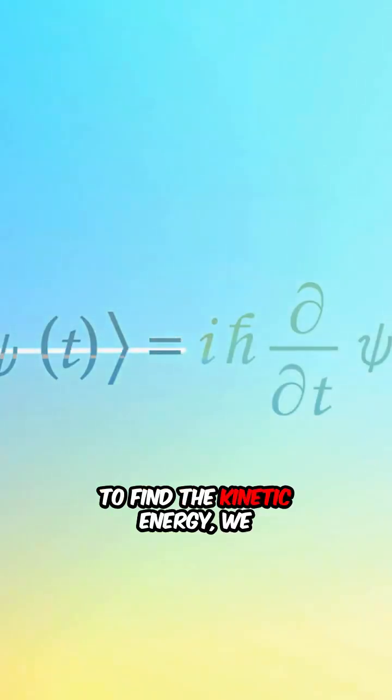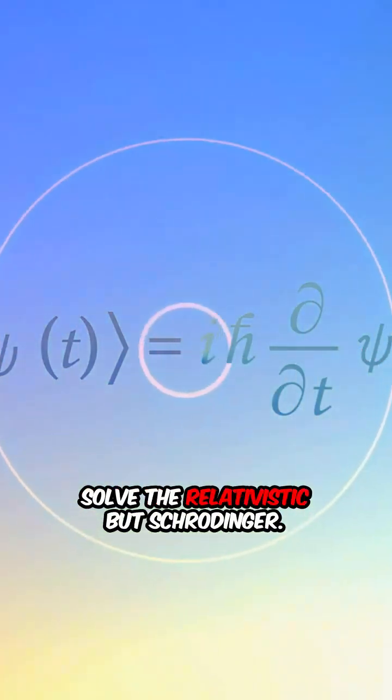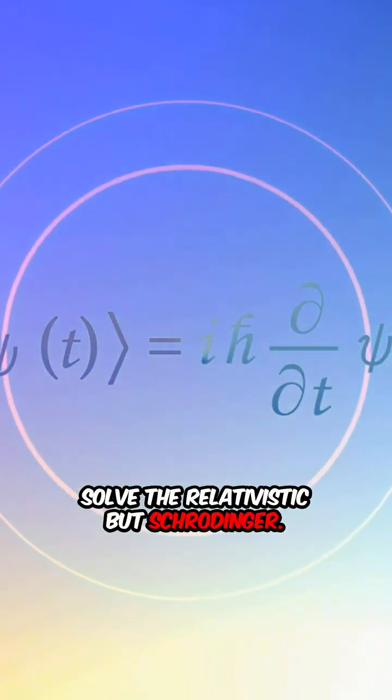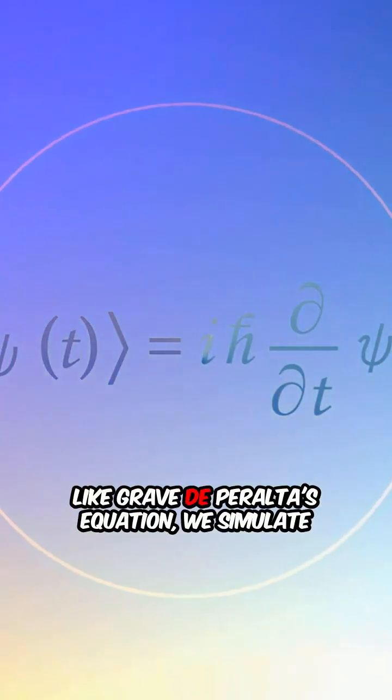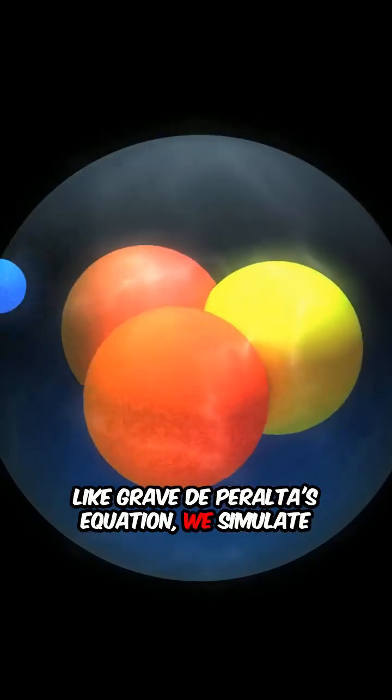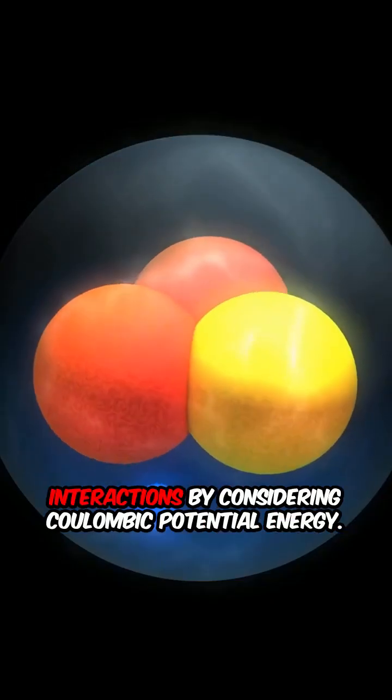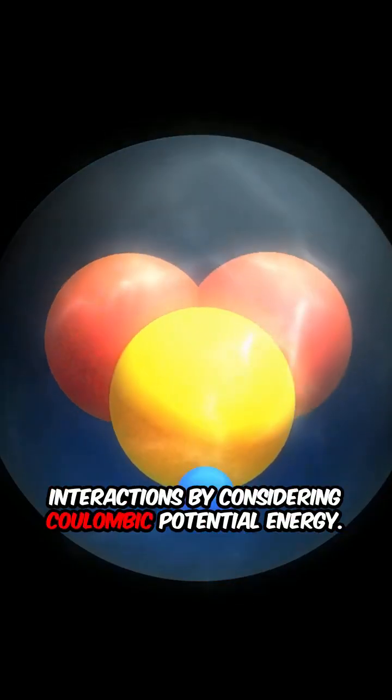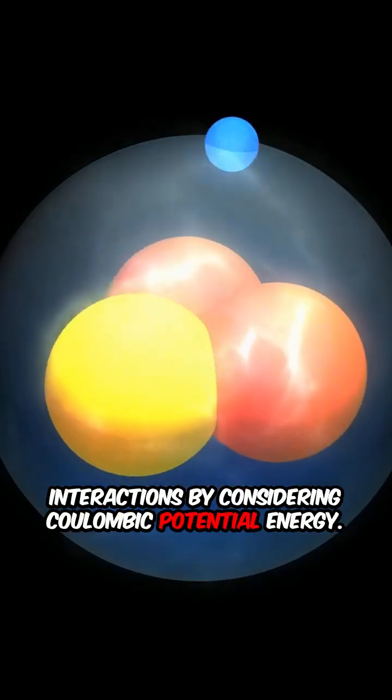To find the kinetic energy, we solve the relativistic but Schrödinger-like Grave de Peralta's equation. We simulate interactions by considering Coulombic potential energy.